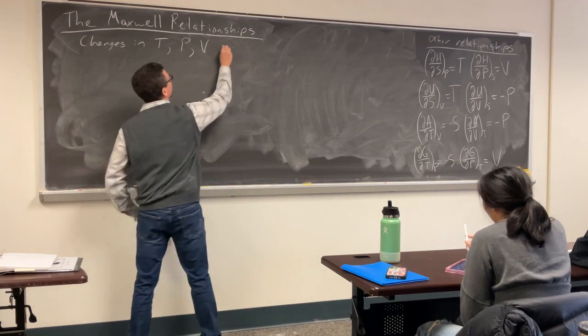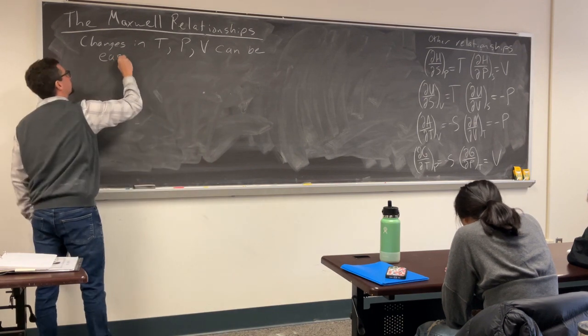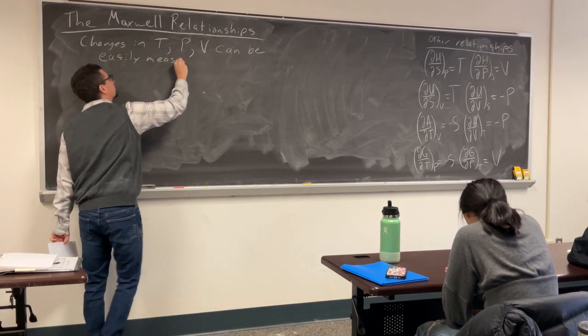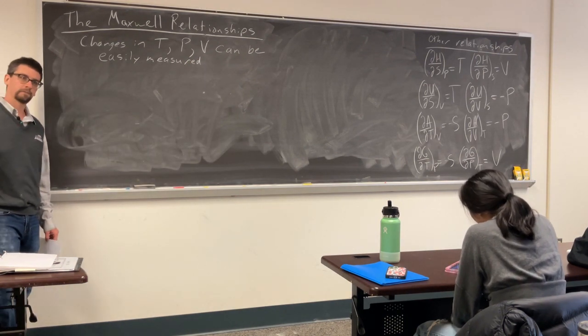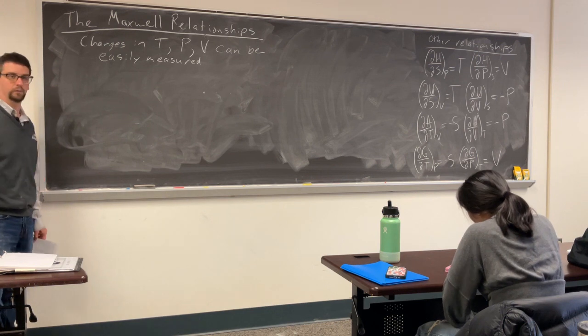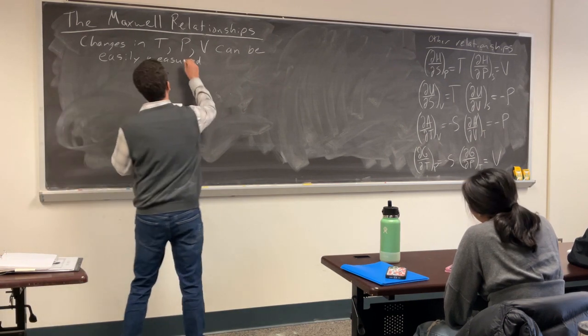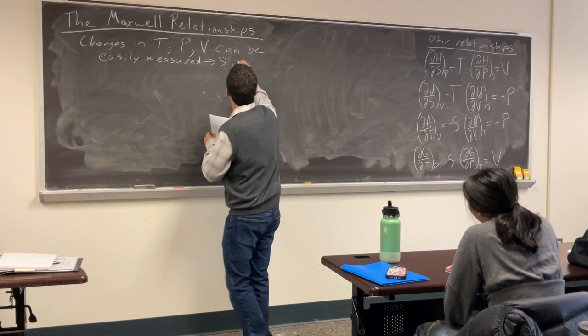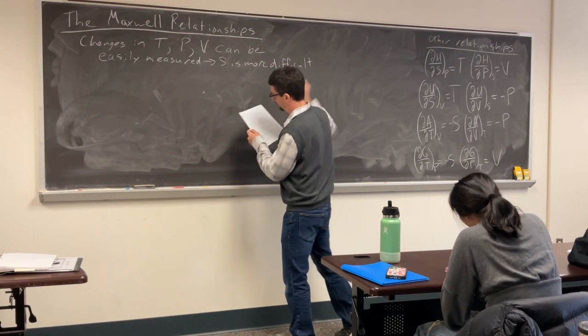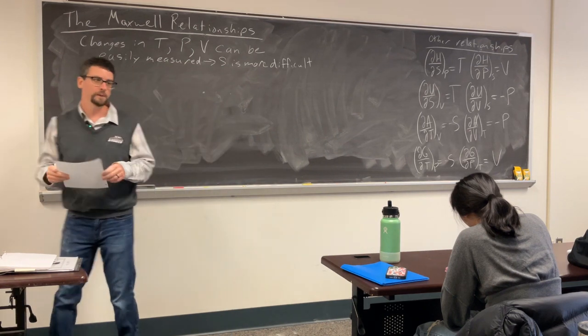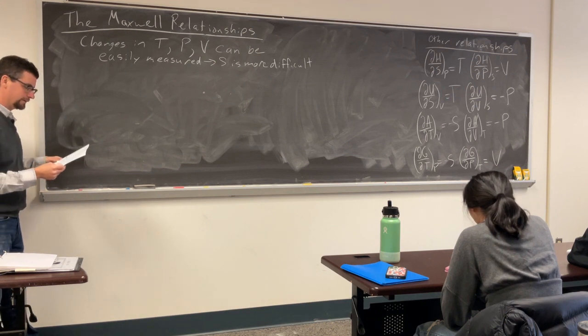Okay. It can be easily measured. Okay. Excluding moles, what's the other natural variable we need? Entropy. Is entropy easy to measure? No. S is more difficult. We don't have an entropy stick where we can just poke it in something and say, this is the level of entropy. All the other ones we kind of do.